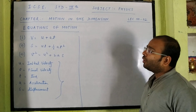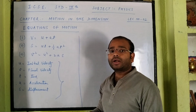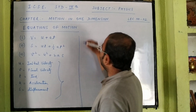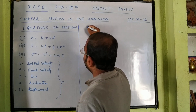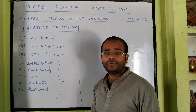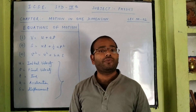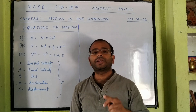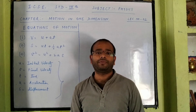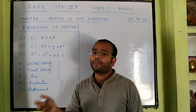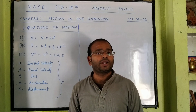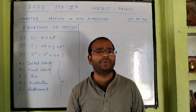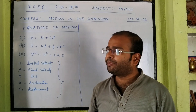We will discuss where these equations come from — what are the derivations. The derivation of equations of motion are of two types: the first is the analytical derivation and the second is the graphical derivation. We will derive these equations of motion by both methods. First, let us derive them one by one by the analytical method, which means by the method of simple definitions.